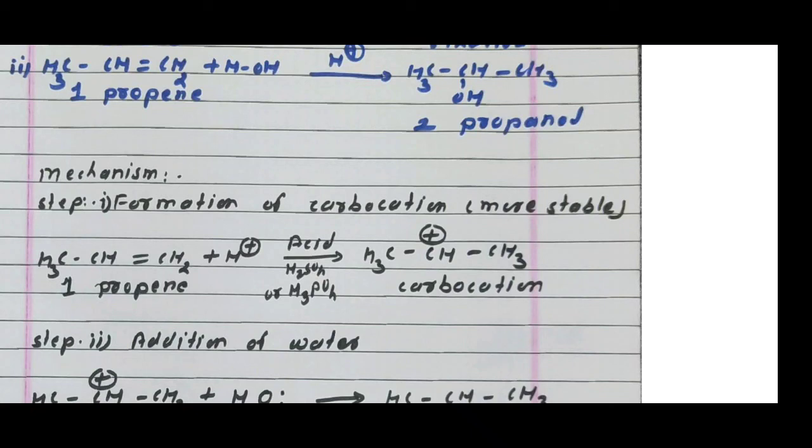The hydration reaction follows Markovnikov's rule — ethene forms ethyl alcohol and propene forms 2-propanol. Step one is protonation of the alkene to form the more stable carbocation: protonation means addition of H⁺. In presence of acid (H₂SO₄ or phosphoric acid), a secondary carbocation forms preferentially over a primary carbocation.